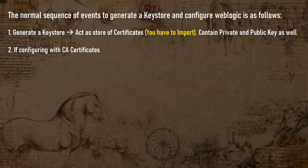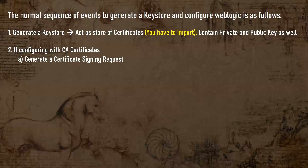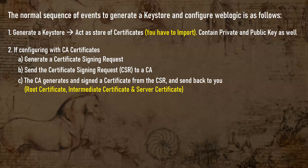If you are configuring with CA certificates for a production website, the next step after creating your keystore is to generate a Certificate Signing Request, or CSR. This CSR, which contains your website address and organization address, is sent to the certificate authority for validation before they issue the certificates. The CA then generates and signs a root certificate, intermediate certificate, and server certificate from the CSR, and sends them back to you so you can import them into your keystore. Along with the server certificate, you also receive your public key.